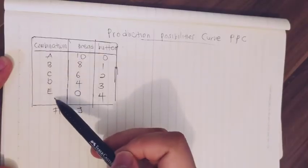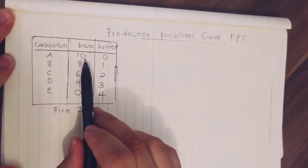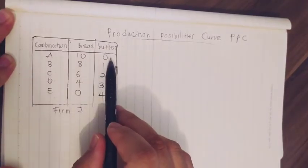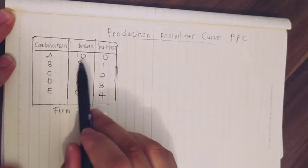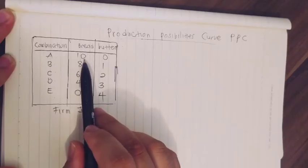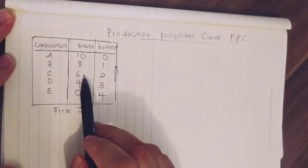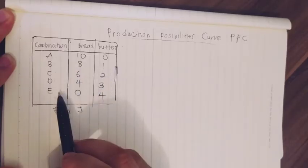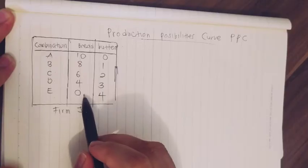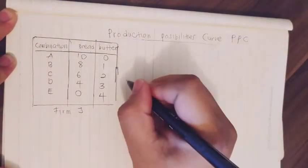We have five options: A, B, C, D, and E. Option A: ten bread and zero butter. Combination B: eight bread and one butter. Combination C: six bread and two butter. D: four bread and three butter. And E: zero bread and four butter, meaning they are only producing butter.